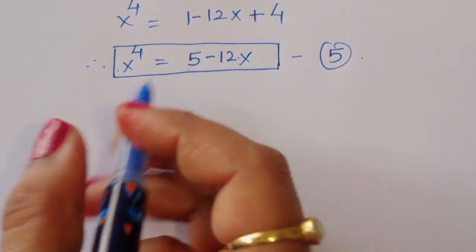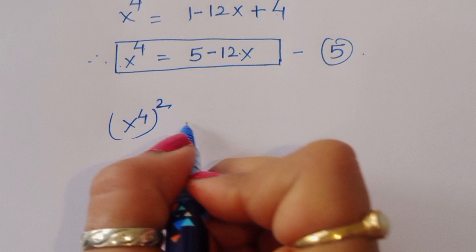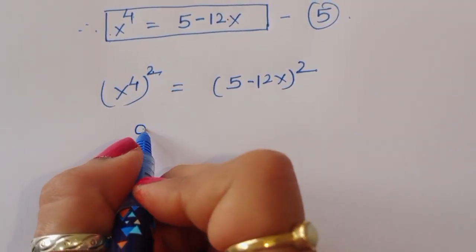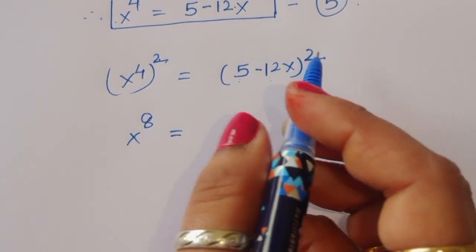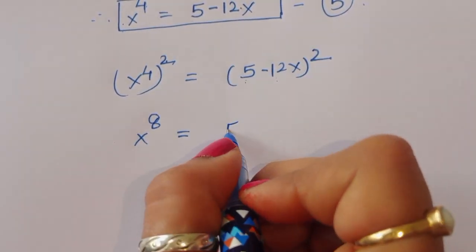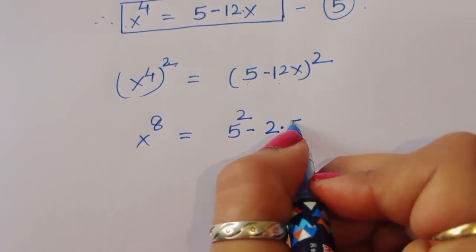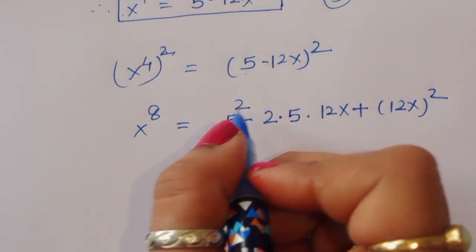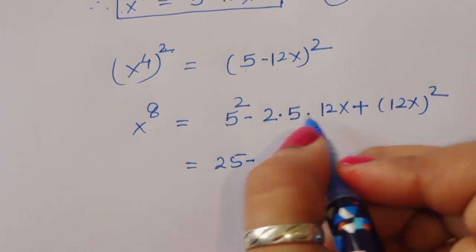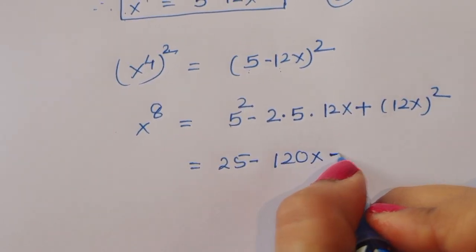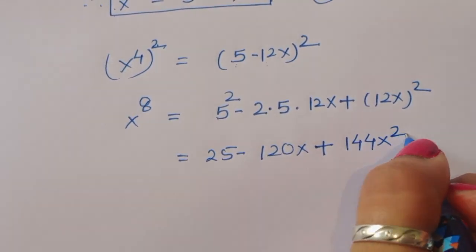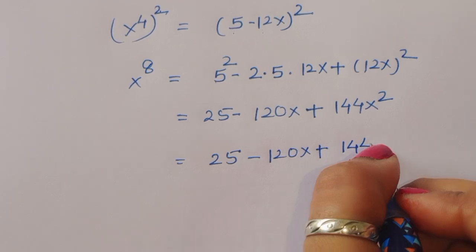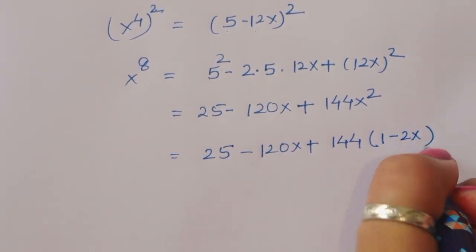Now taking the square of both sides of equation 5: (x⁴)² = (5 - 12x)², so x⁸ = (5 - 12x)². Using (a - b)² = a² - 2ab + b², we get x⁸ = 25 - 120x + 144x².